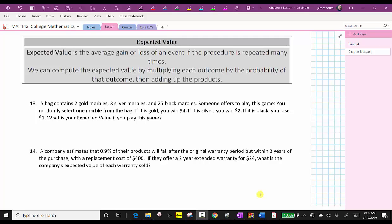Let's take a look at two examples. For number 13, a bag contains two gold marbles, eight silver marbles, and 25 black marbles. Someone offers to play this game. You randomly select one marble from the bag. If it is gold, you win $4. If it is silver, you win $2. If it is black, you lose $1. What is your expected value if you play the game?